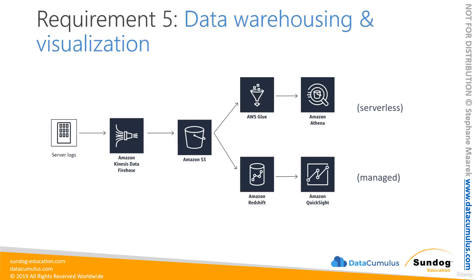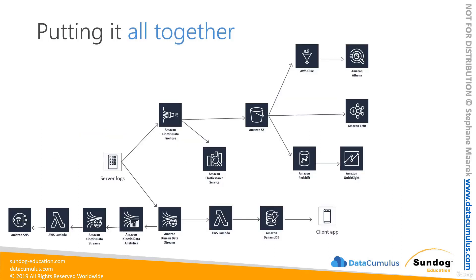Finally, we'll cover the data warehousing and visualization needed for business analysis purposes by using AWS Glue, Athena, Redshift, and QuickSight on top of our S3 data lake. All five of these requirements fit together into one huge system, which you'll build by the end of this course. Success on the exam requires more than just studying materials — it requires real hands-on experience and an understanding of how all these services can work together to solve larger problems.